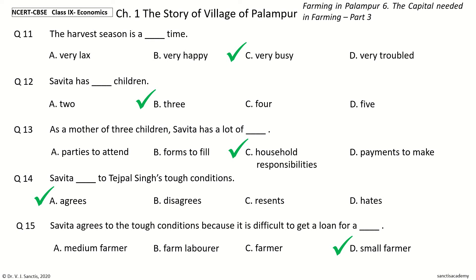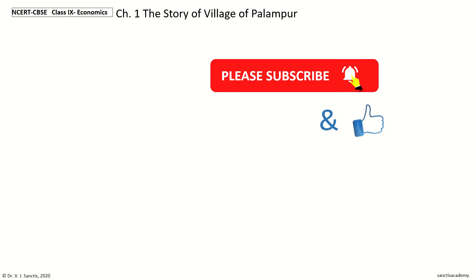So, in this video we learnt every point in the section Farming in Palampur, Number 6: The Capital Needed in Farming, Part 3 — Savita's Solution. In the next video, we will learn every point in the section Farming in Palampur, Number 7: Sale of Surplus Farm Products. I will see you there.